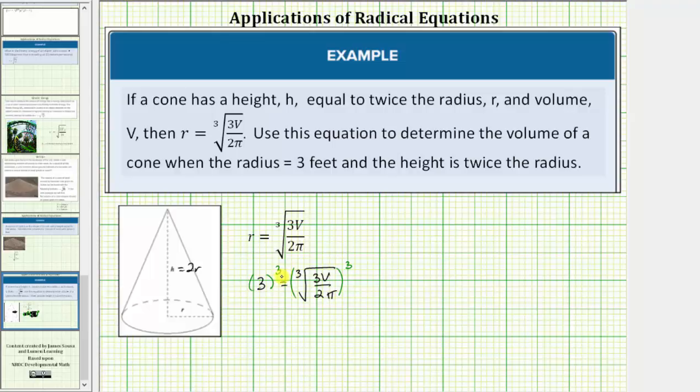Simplifying on the left, three cubed is equal to three times three times three, which equals 27. So we have 27 equals. On the right, the cube undoes the cube root and we're left with the fraction three v over two pi.